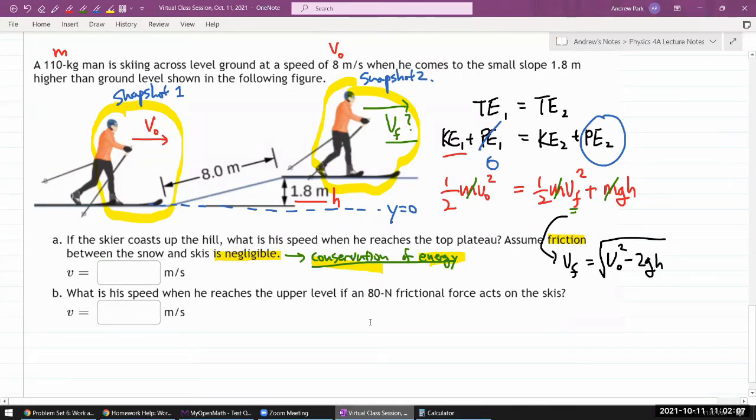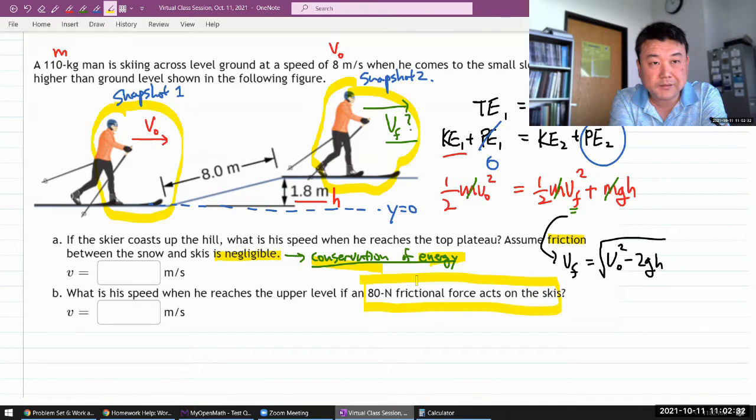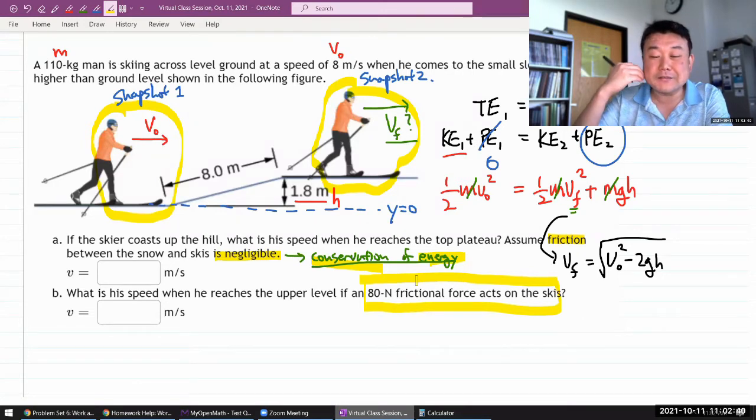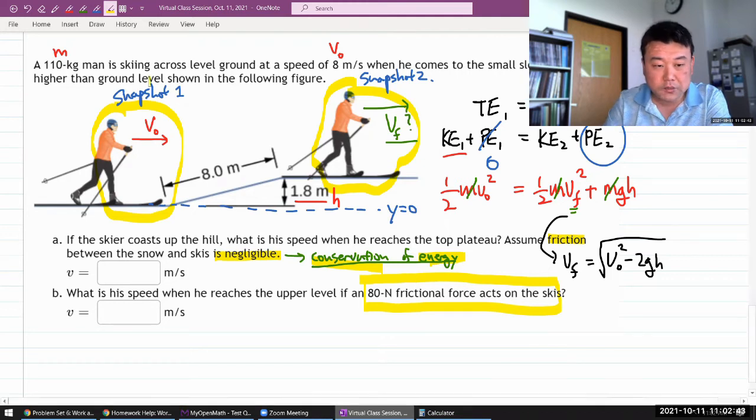So part A is pretty simple. It's for part B that I want you to do this question. So in part B, it asks, what is his speed when he reaches the upper level if this amount of frictional force acts? So we can no longer say that energy is conserved.